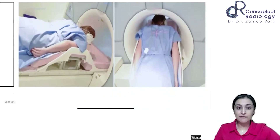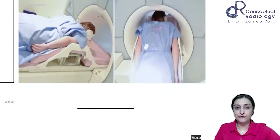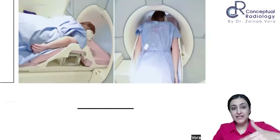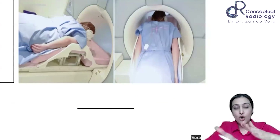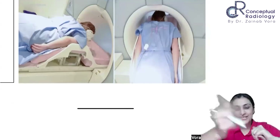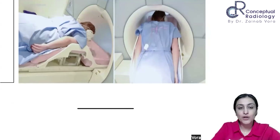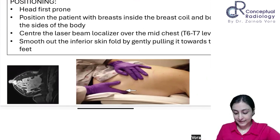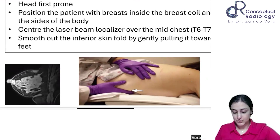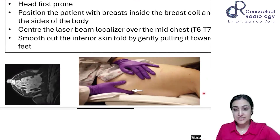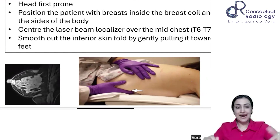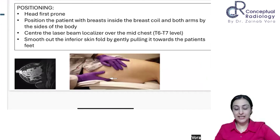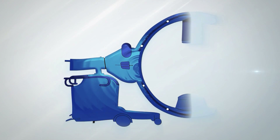You have to make sure there is no abdominal fat coming into the coil and there are no skin folds — that is essential. Regarding patient orientation: these are the hands of the patient, and proper positioning must be confirmed before scanning.